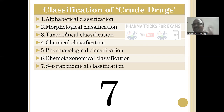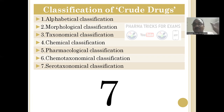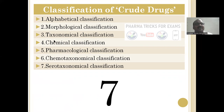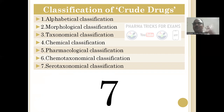The seven types of classification are: morphological (based on parts of the plant — roots, leaves, stems), taxonomical (based on family, phylum, species), chemical (based on chemical constituents), pharmacological (based on pharmacological activity), chemotaxonomical (a mix of chemical and taxonomical), and serotaxonomical (based on serology — antigen, antibody, immune system). Plants are divided based on immunogenic properties.